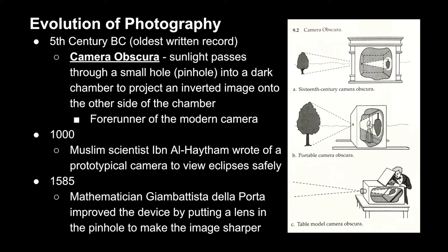Another written record occurs in the year 1000, wherein Muslim scientist Ibn al-Haytham wrote of a prototypical camera that he used to view eclipses safely. Moving on to 1585, a mathematician named Gian Battista de la Porta improved this device by putting a lens in the pinhole, and in doing so this created a sharper image.